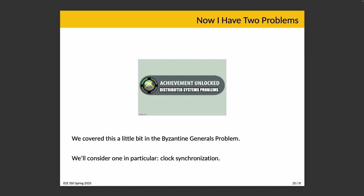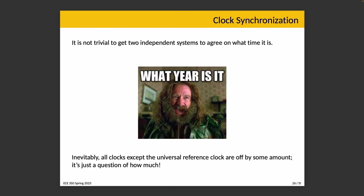We covered one possible issue in distributed systems when we talked about the Byzantine generals problem — framed around the idea of finding traitors when trying to complete the mission of the emperor. There are lots of other things that fall under this category. One problem I want to introduce in detail is clock synchronization. What is clock synchronization? It's the idea of: do we agree on what time it is? And the truth of the matter is it is not trivial to get two independent systems to agree on what the current time is.